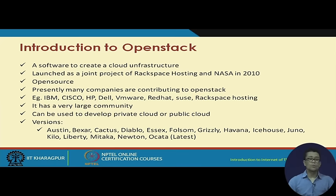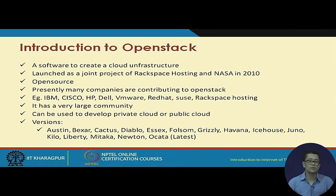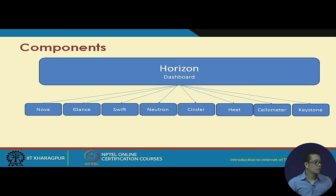Some of the versions of OpenStack are listed here. They are released in alphabetical order — the first version in 2010 was called Austin, and the latest version right now is Ocata.